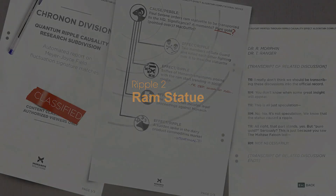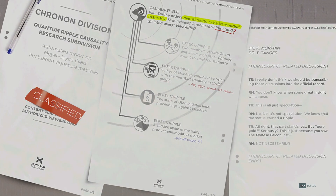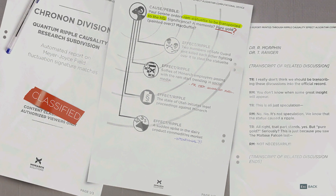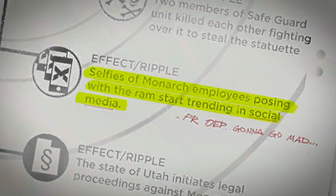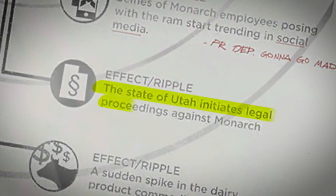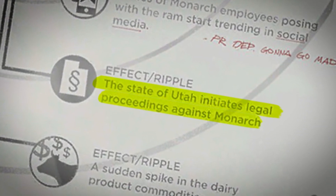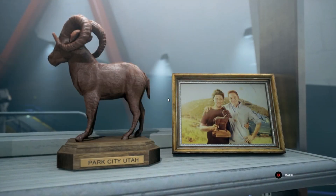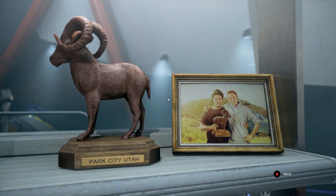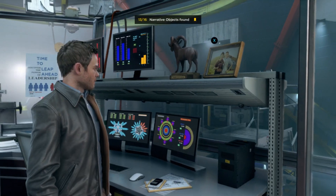Ripple 2: Ram Statue. Nature of pebble: Ram's statuette is transported back to Monarch HQ. Monarch employees begin a trend of posting selfies with it on social media. As a result, the state of Utah initiates legal proceedings against Monarch. While not specified in these documents, it is implied that the statue is a trophy Jack and Paul stole while in Utah years back. 'You always did drag me into these situations.' 'Me? Drag you? One word: Utah.'